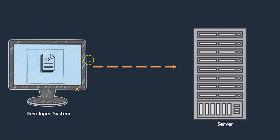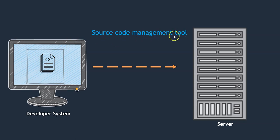If you see, the developer has code on their system and we want to copy it onto the server. Since code is given every day, we need to maintain it appropriately. To do so, either we can do automation or use a tool. There is a tool called a source code management tool which helps us manage our code appropriately. We should use a source code management tool.